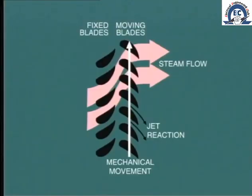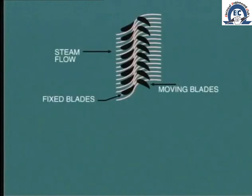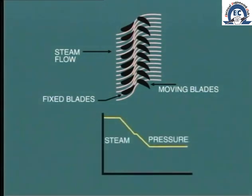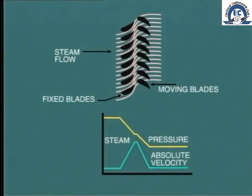Now let's move on to look at the characteristics of reaction type blading. In this case, the mechanical force on the blade is caused by reaction as the jet of steam exits from the blade. This is the same concept as a jet engine. With this type of blading, the moving blades are shaped in the same manner as the fixed blade, that is in the profile of a curved nozzle. This causes the steam pressure to fall as it passes through the moving blade, resulting in an expansion of the steam and an increase in its velocity relative to the blade, causing a powerful jet action.